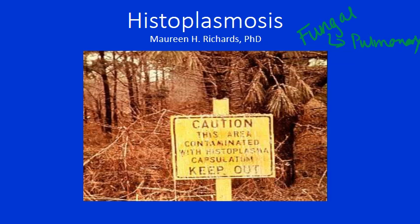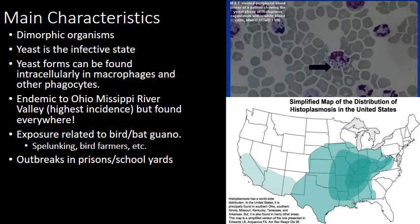This is the first of the fungal infections we're talking about. We've talked about a lot of different infections that are bacterial, some parasites, and some viruses, and now we're going to start digging into the fungal causes of disease. So first off, Histoplasma is a dimorphic organism. What does that mean?